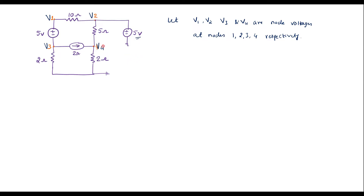We are supposed to find these node voltages using nodal analysis. In node analysis, first we are supposed to mark all branch currents. Let the current through this branch be I1, the current through this branch be I2, current through this branch be I3, and current through this branch be I4. We can observe that the 5 volt voltage source is directly connected to V2. Therefore, voltage V2 is equal to 5 volts. We will call it equation 1.